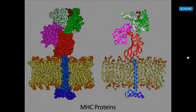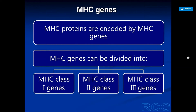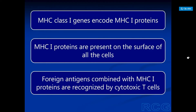The MHC protein structure is shown with different colors and different domains. The MHC genes are responsible for the MHC proteins and can be divided into three types: MHC class 1 genes, MHC class 2 genes, and MHC class 3 genes. The MHC class 1 genes encode the MHC class 1 proteins, which are present on the surface of all cells, and foreign antigens combined with MHC class 1 proteins are recognized by the cytotoxic T-cells.